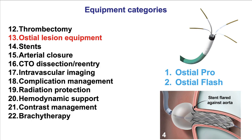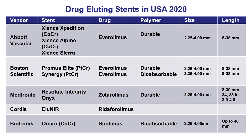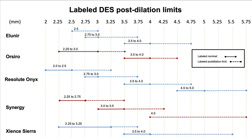Category number 13 is equipment for treating ostial lesions. We discussed the ostial flush balloon to flare stents in the ostial location. There is also the Ostial Pro device that can be used to accurately position stents when treating aorto-ostial lesions. Regarding stents: there are bare metal stents, drug-eluting stents, and covered stents. There are five drug-eluting stents in the United States as of 2020, and a key characteristic is their post-dilation limit — important when stenting bifurcations or when there is significant size mismatch.